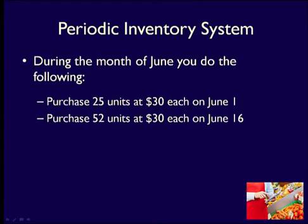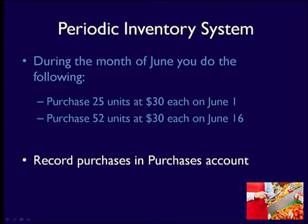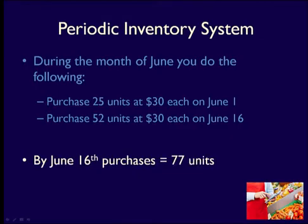Say you're a retailer and you purchased 25 units of inventory on June 1st and then another 52 units on June 16th. Using the periodic inventory system, you record both purchases as increases to a purchases account. The purchases account is where you track your inventory. Now you know how many units you've purchased — a total of 77.